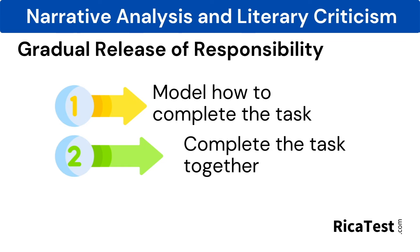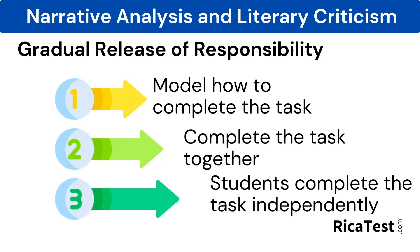Then, perhaps in the next story, project the story map or the story grammar outline on the whiteboard or on chart paper, and ask students to volunteer to come up and fill in the blanks — this is when the teacher and the students complete the task together. Then, finally, in the third lesson, the teacher lets the students complete the story map or the story grammar outline independently in order to demonstrate their ability to identify the parts of a story.